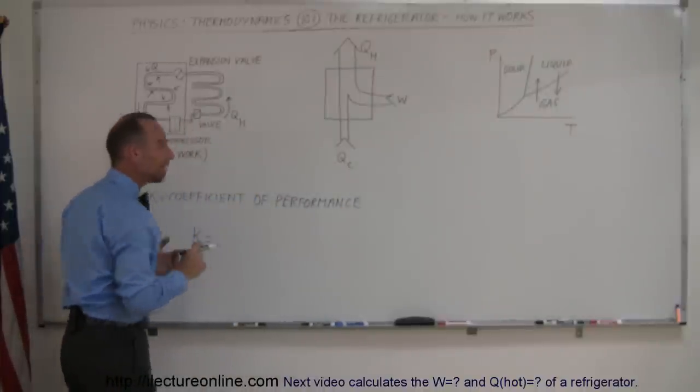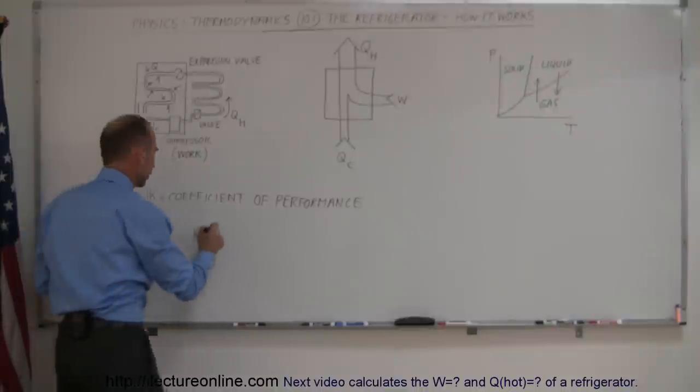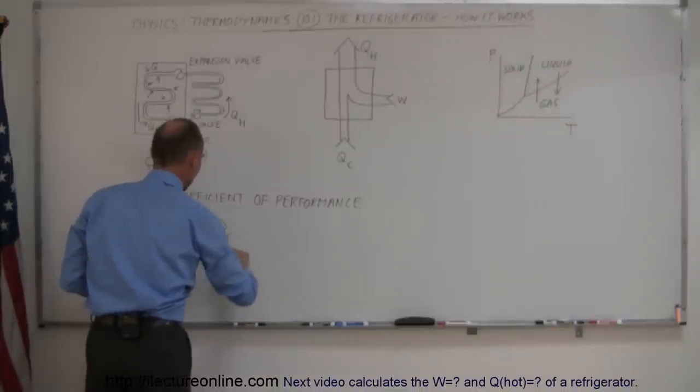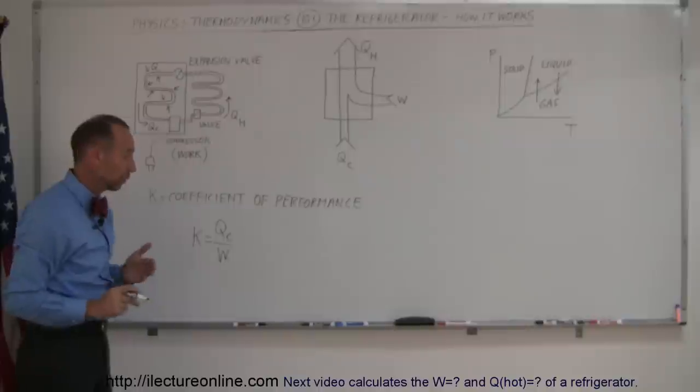And K is then defined by the amount of heat we pull out of the cold reservoir, which is Q sub C, divided by the amount of work it takes to do that.